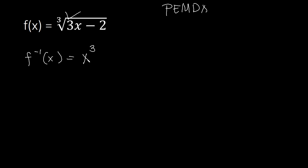Inside we have two operations: multiplication by 3 and subtraction of 2. In inverse operations we follow reverse PEMDAS — starting with addition/subtraction before multiplication/division. So we address minus 2 first by adding 2, then divide the entire thing by 3. Therefore f inverse of x equals x cubed plus 2, all over 3.